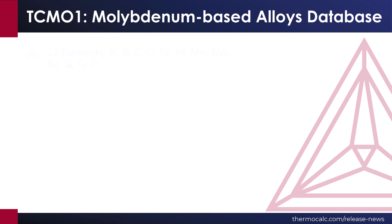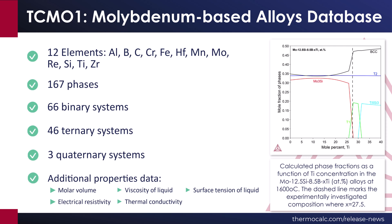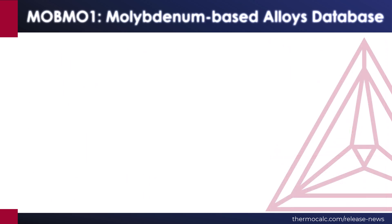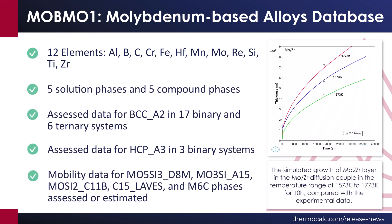TCMO1 includes 12 elements, 167 phases, 66 binary systems, 46 ternary systems, and 3 quaternary systems. The database also includes several additional thermophysical properties, as listed on the screen. A companion mobilities database, MOBMO1, is also released to correspond to TCMO1.